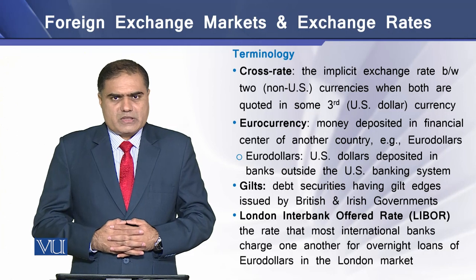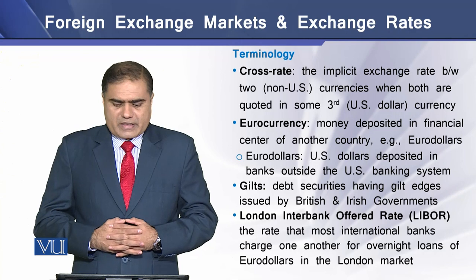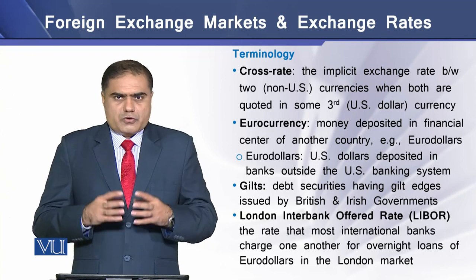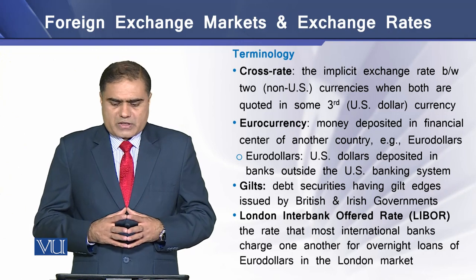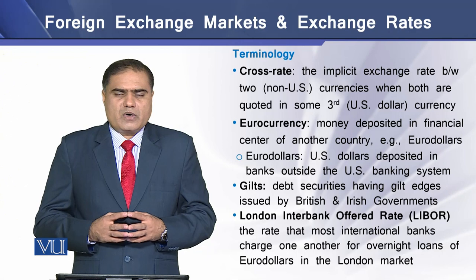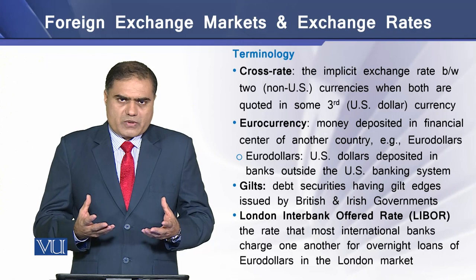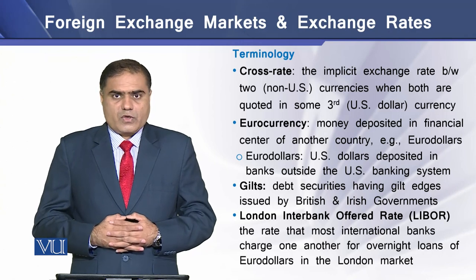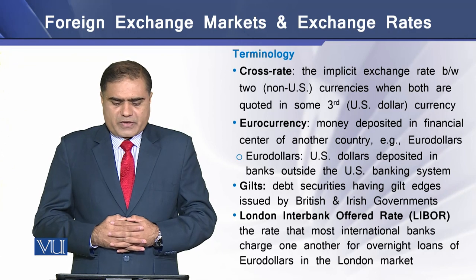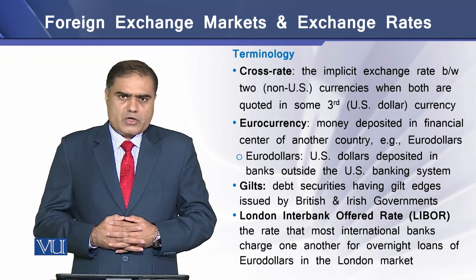The first term is the cross rate. This is the implicit exchange rate between two non-U.S. currencies when both are quoted in terms of some other third currency, which may be the U.S. currency. Euro currency is the money deposited in a financial center of another country. For example, Eurodollars.